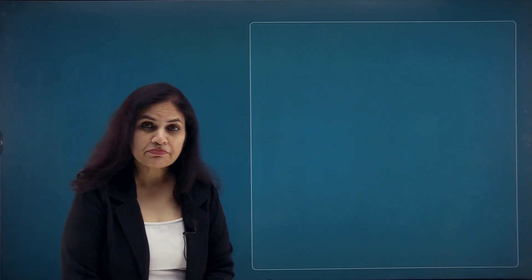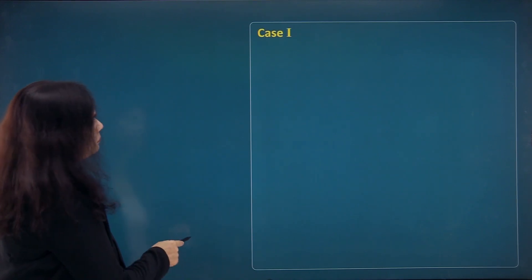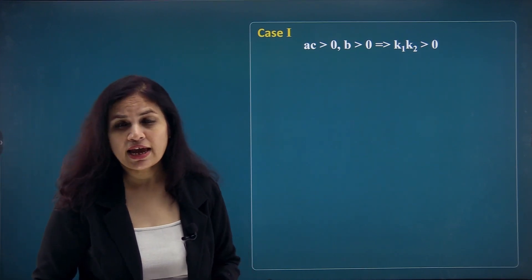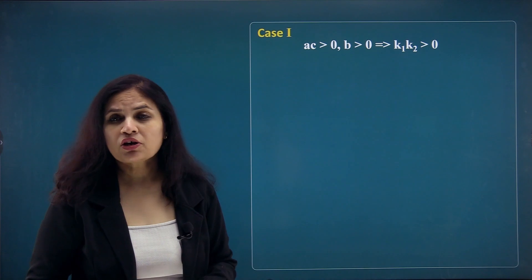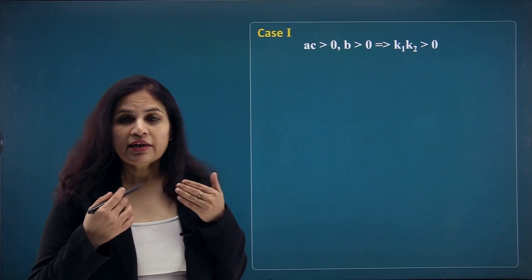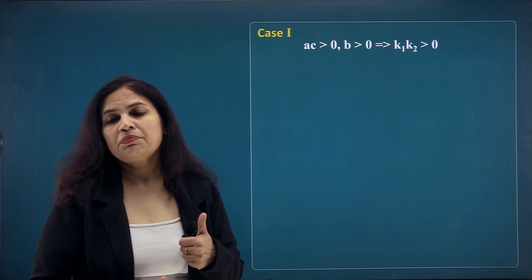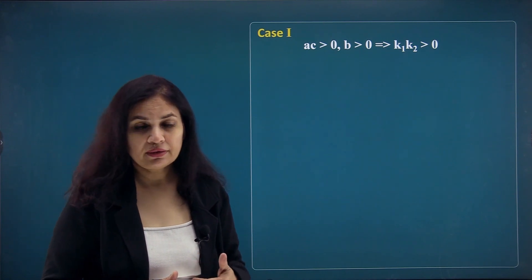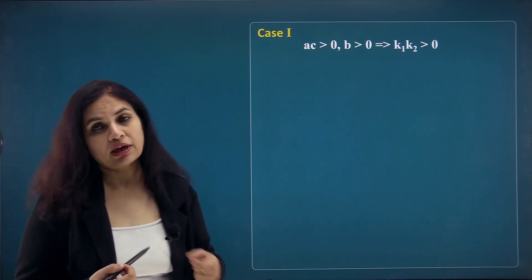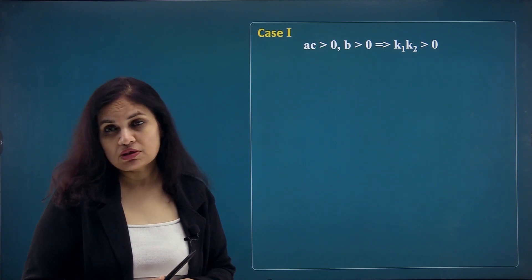The four examples are related to different combinations of factors depending on their signs. In every case of middle term split, we are concerned about only two things: the product ac and the sum b. We look at the sign of the product ac and the sign of the middle term b, and depending on these, we choose our factors.